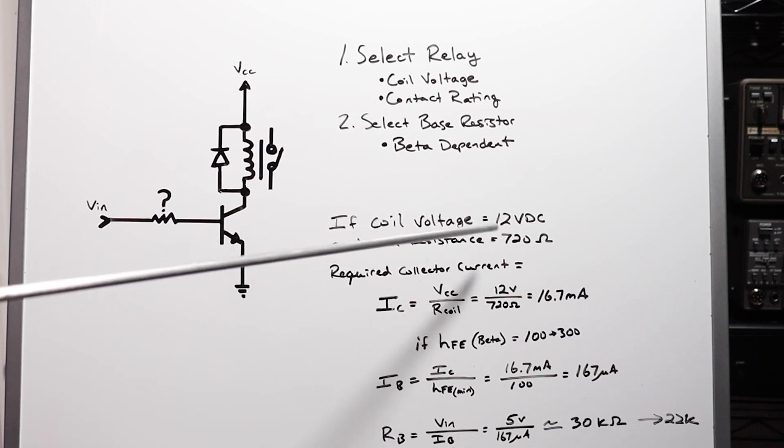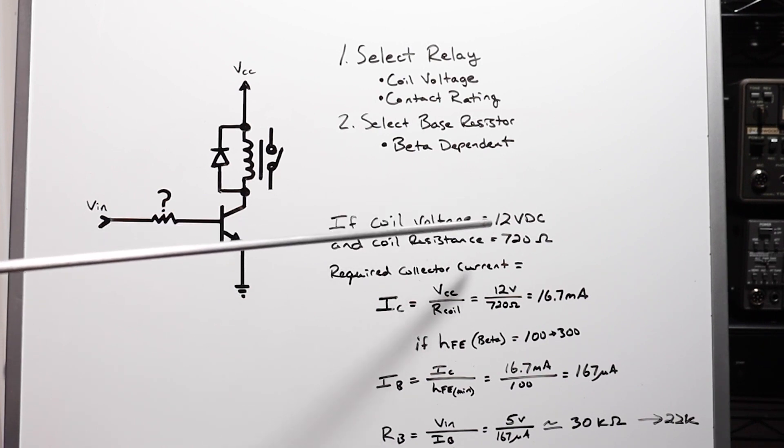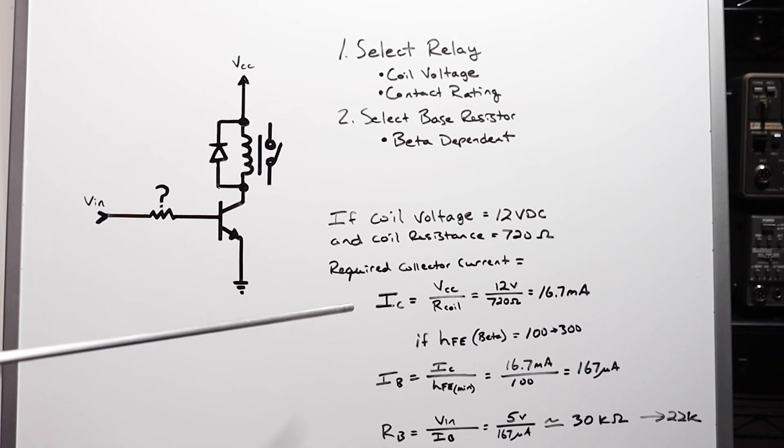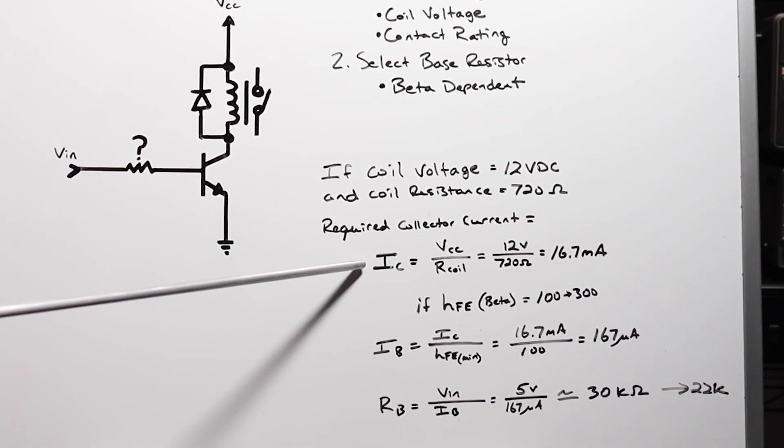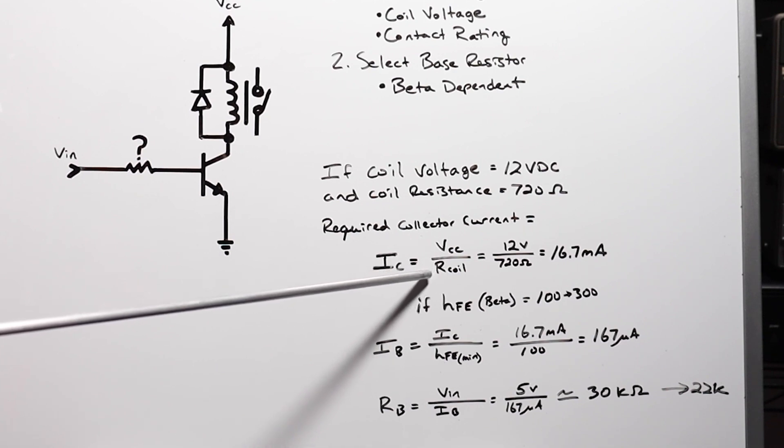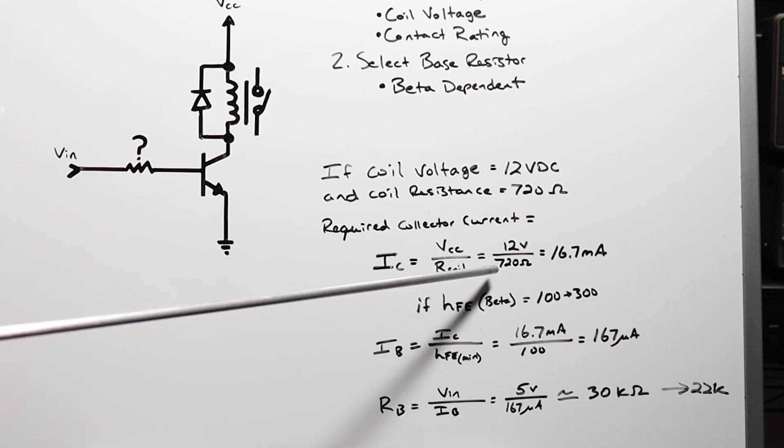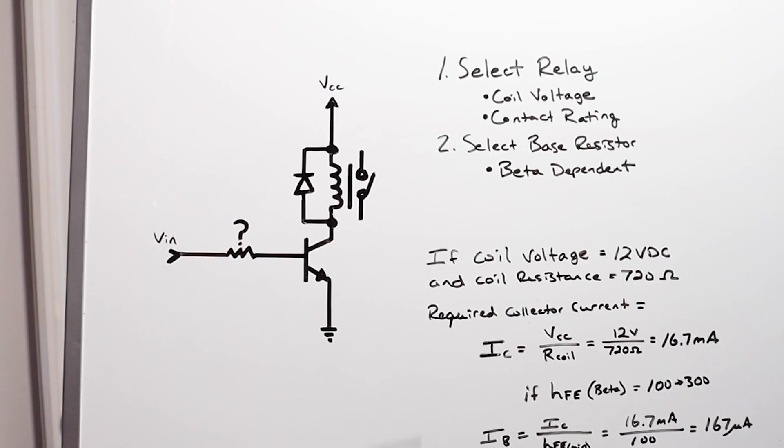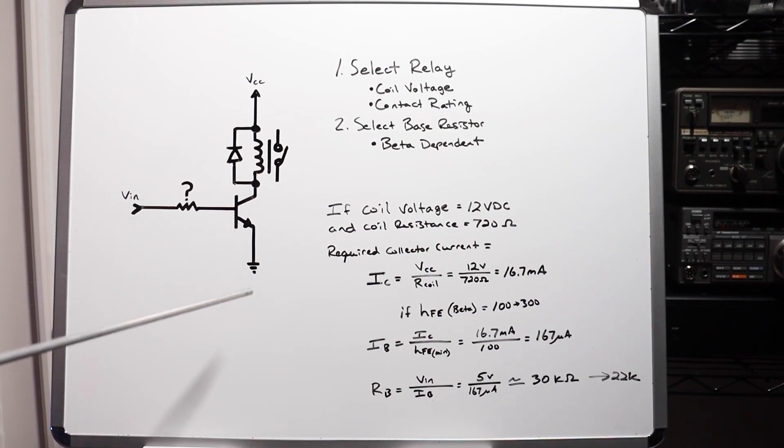Now sometimes the data sheet will explicitly specify the amount of current required here, but you can use Ohm's law to figure it out. So the collector current required is VCC divided by your coil resistance, or in our case, 12 volts divided by 720 ohms, which is 16.7 milliamps. So we have to put 16.7 milliamps at least in this coil to actuate the armature. So now that we know that, we need to figure out how much current we need to put through the base to give that coil enough juice to actually switch.